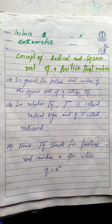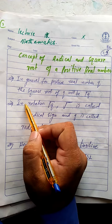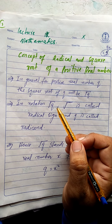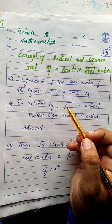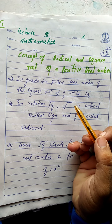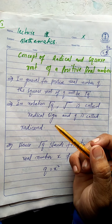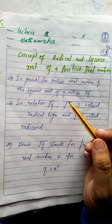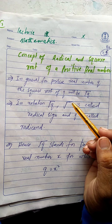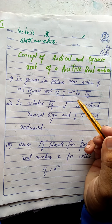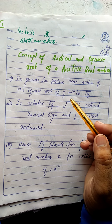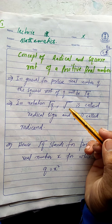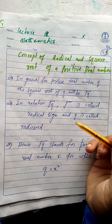Here we have a notation. The notation under root q, or radical q, uses what we call the radical sign. This symbol is called the radical sign.